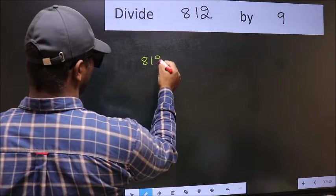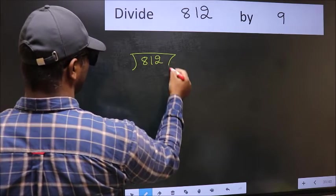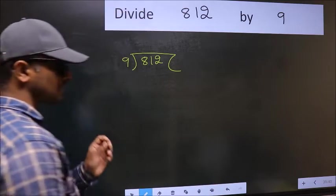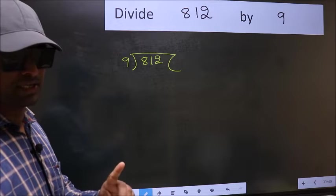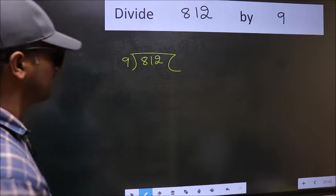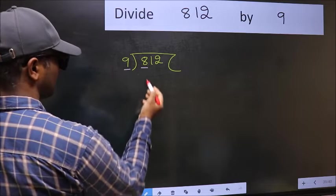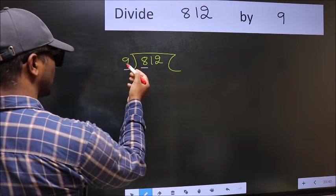812 and 9 here. This is your step 1. Next. Here we have 8 and here 9. 8 is smaller than 9.